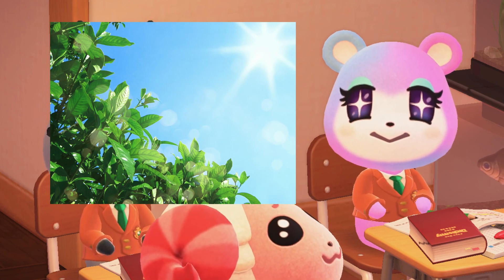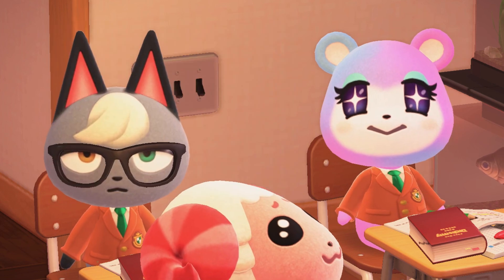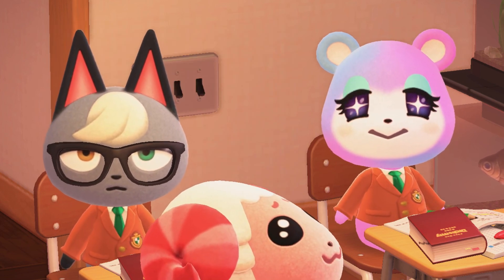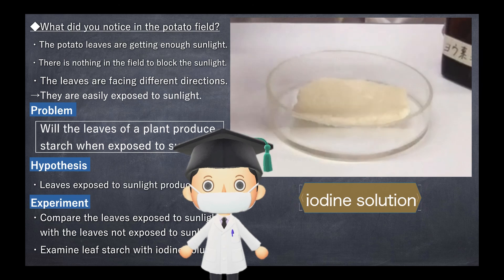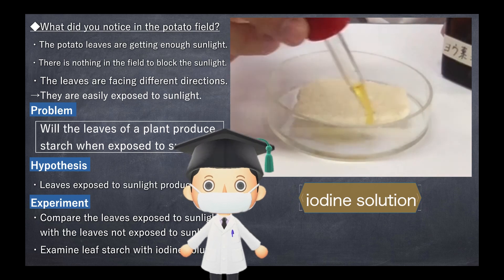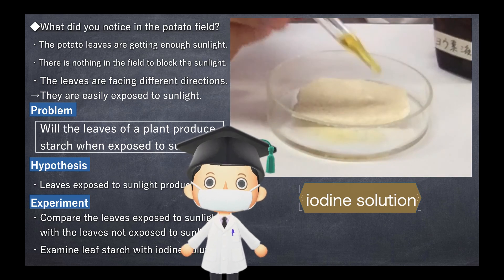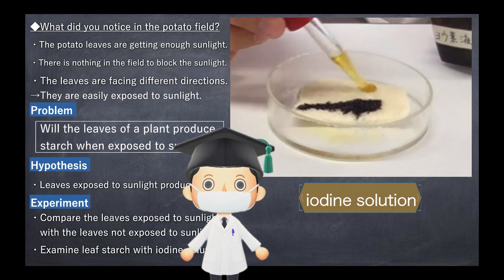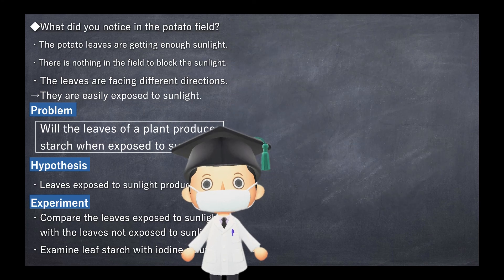We can check if there is starch on the leaves by using iodine solution. You used iodine solution when you were in the fifth grade — if you add iodine solution to something that contains starch, it will turn blue and purple.